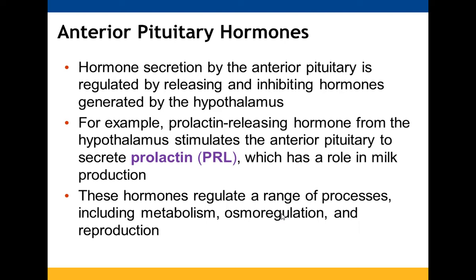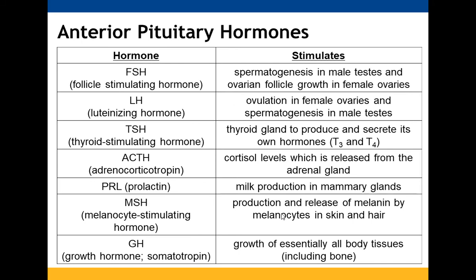Metabolism, osmoregulation, and reproduction are among processes regulated by anterior pituitary hormones. These hormones include FSH and LH (involved in reproductive processes), TSH (influences the thyroid), ACTH (impacts cortisol levels), PRL (prolactin), MSH (melanin in melanocytes), and GH (affects many body tissues including bone).